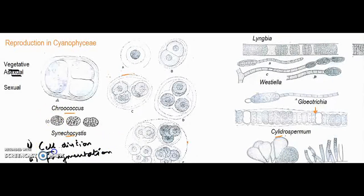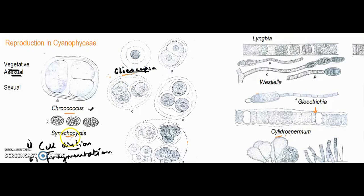Cell division is the feature exhibited by unicellular members like Chroococcus, Gloeocapsa, and Synechocystis. These unicellular members exhibit cell division as their vegetative reproduction.